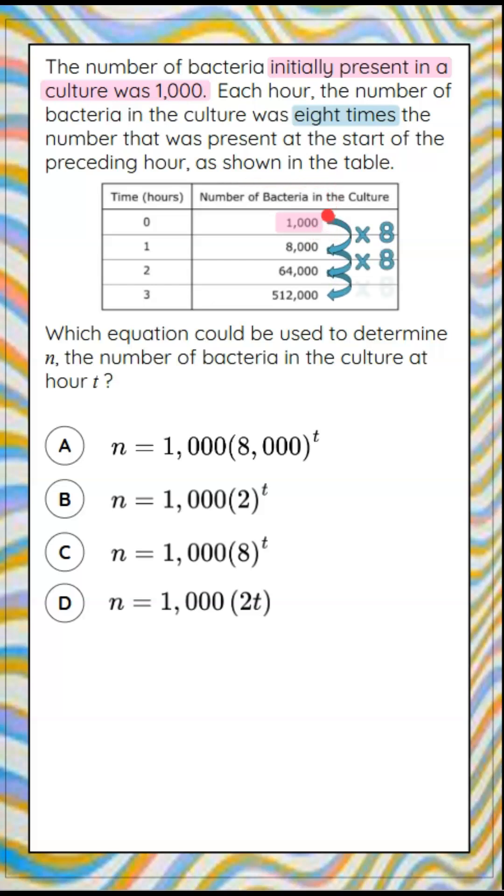We can see that the bacteria at zero hours was 1,000 in the culture. After one hour, it increased eight times, 1,000 to 8,000. Another hour, another times eight, 64,000, and again, three hours later, 512,000.